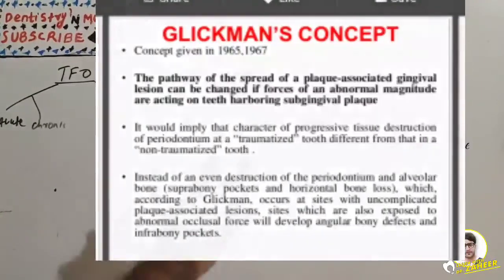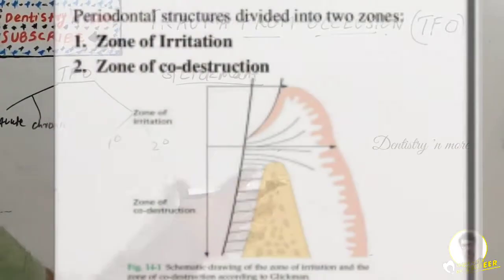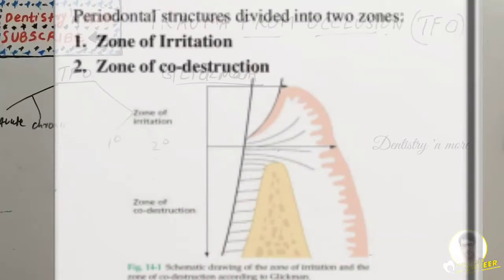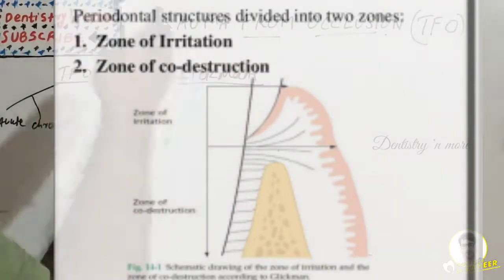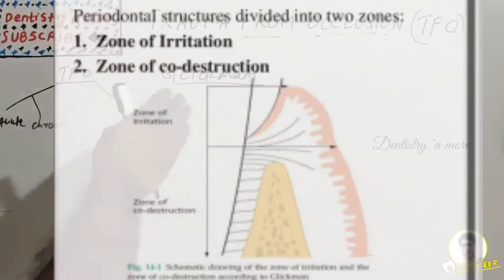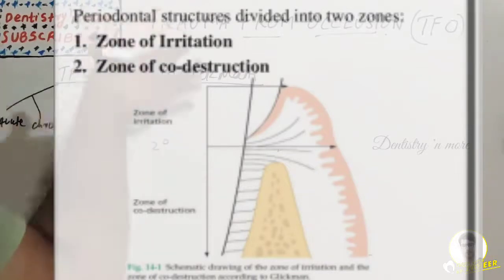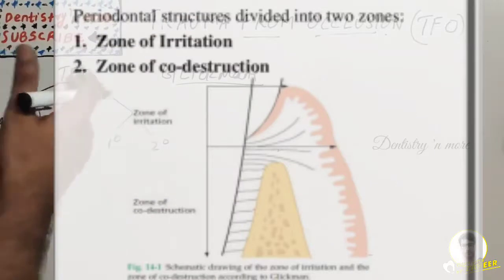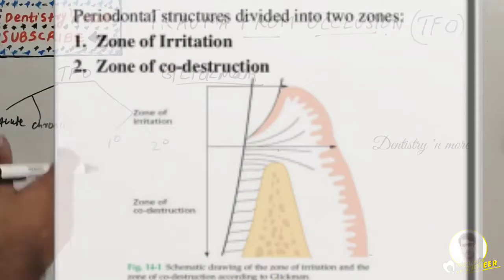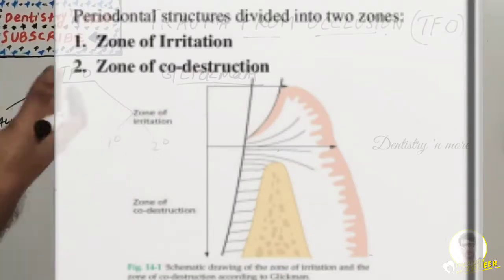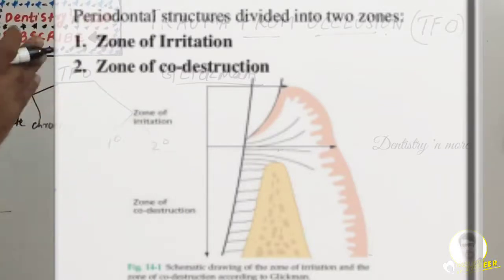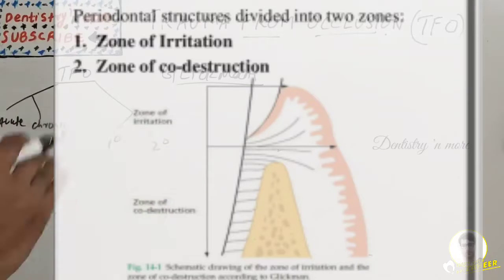Glickman explained this through the zone of irritation and zone of co-destruction. The zone of irritation includes the marginal and interdental gingiva — soft tissue bordered by the tooth on only one side and not affected by occlusal forces. Gingival inflammation cannot be induced by trauma from occlusion but results from microbial plaque. The plaque-associated lesion at a non-traumatized tooth propagates apically by first involving the alveolar bone and later the periodontal ligament, resulting in horizontal bone destruction.